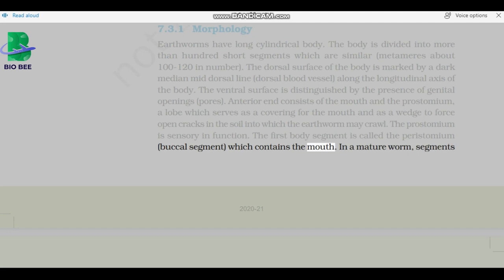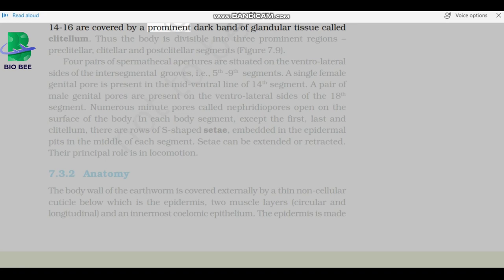In a mature worm, segments 14 to 16 are a prominent dark band of glandular tissue called clitellum. Thus, the body is divisible into three prominent regions: pre-clitellar, clitellar, and post-clitellar segments. Four pairs of spermathecal apertures are situated on the ventral lateral sides of the intersegmental grooves. A single female genital pore is present in the mid-ventral line of 14th segment. A pair of male genital pores are present on the ventral lateral sides of the 18th segment. Numerous minute pores called nephridiopores open on the surface of the body. In each body segment, except the first, last, and clitellum, there are rows of S-shaped setae, embedded in the epidermal pits in the middle of each segment. Setae can be extended or retracted. Their principal role is in locomotion.